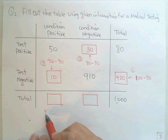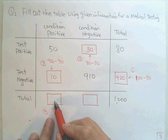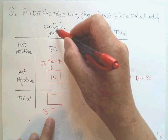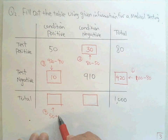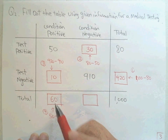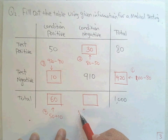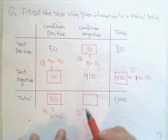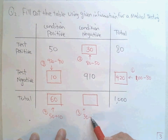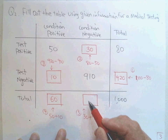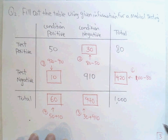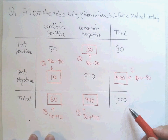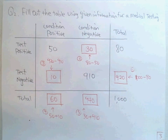Now the last two boxes. The total condition positive is 50 plus 10, which equals 60 — these are the real disease patients. The total condition negative is 30 plus 910, which equals 940 — these are the healthy persons going to the test among the thousand. That is all for this example. Thank you.